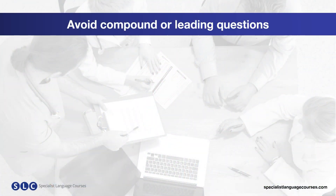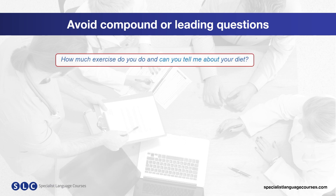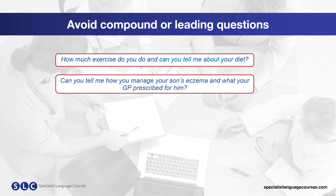Next we're going to look at the type of questions you should avoid during your OET speaking exam. Compound questions are when we use two questions in one. For example: 'How much exercise do you do? Can you tell me about your diet?' or 'Can you tell me how you manage your son's eczema and what your GP prescribed for him?' Using compound questions may become confusing for the patient or important information may be missed.